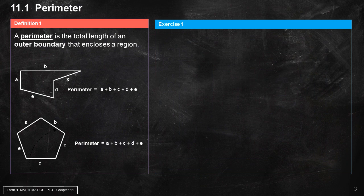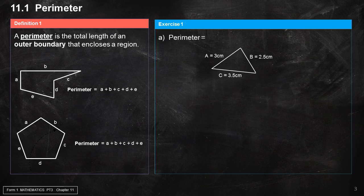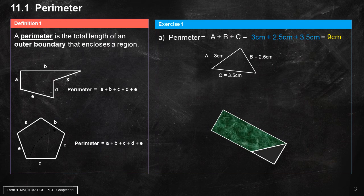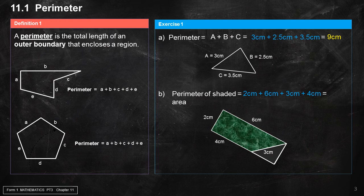Exercise 1. Perimeter equals A plus B plus C. That is 3 centimeters plus 2.5 centimeters plus 3.5 centimeters. Perimeter of Shaded Area equals 2 centimeters plus 6 centimeters plus 3 centimeters plus 4 centimeters.